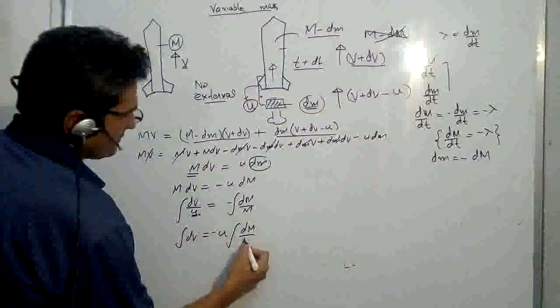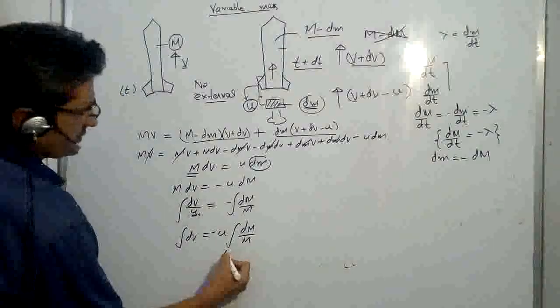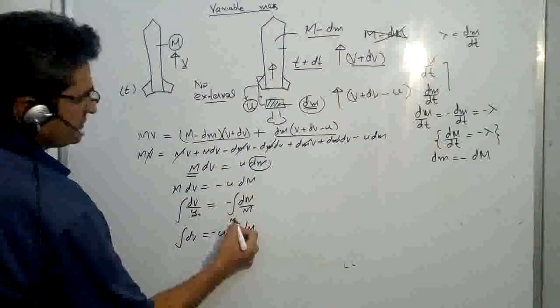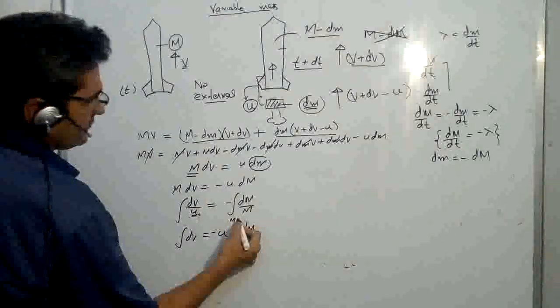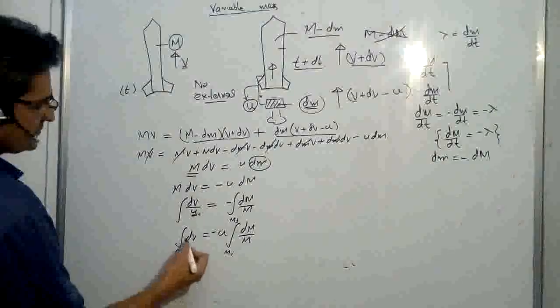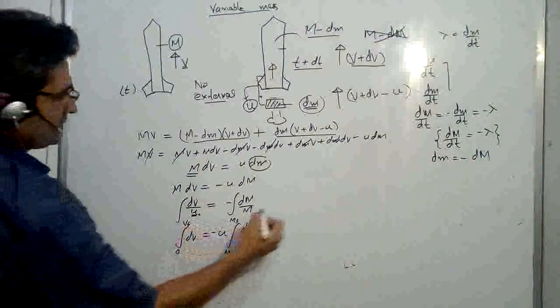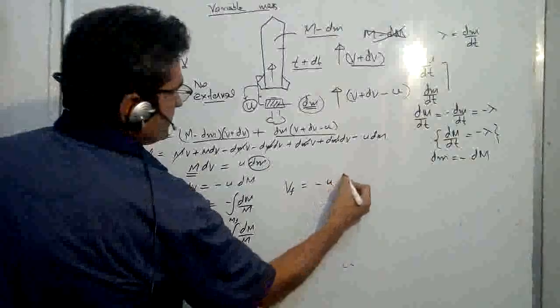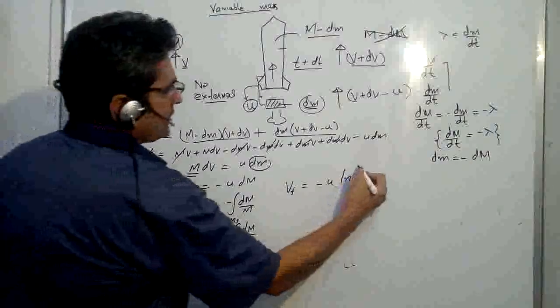And integrate. This is constant, it's not variable, so we can write dv is equal to u minus dm upon m. Let m initial be mi and let this be m final at any given time t, and velocity initial be zero, this is velocity final.